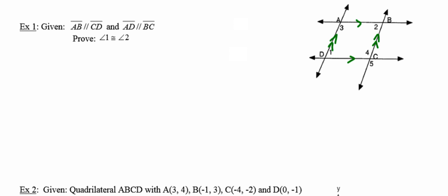And because ABCD is a parallelogram, I know that for every parallelogram, opposite angles are always congruent. So that tells me that angles one and two are congruent, and that's exactly what it is that we were trying to prove.